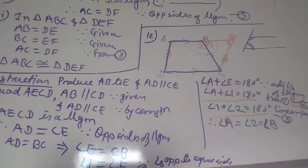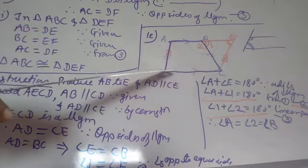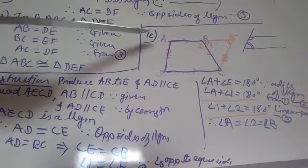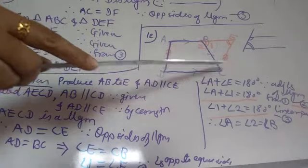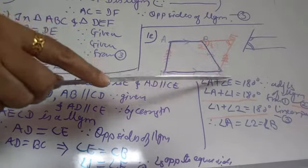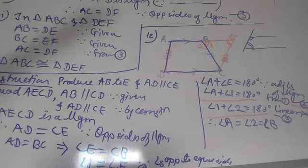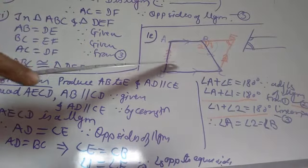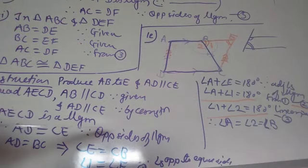In problem number 12, ABCD is a trapezium in which AB is parallel to CD, and the non-parallel sides AD and BC are equal. We need to show that angle A equals angle B, angle D equals angle C, and further prove that the diagonals are equal.